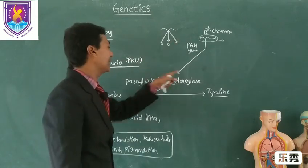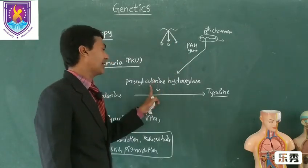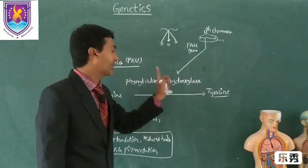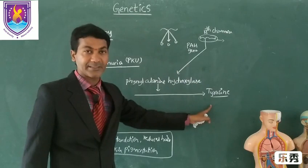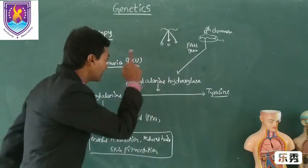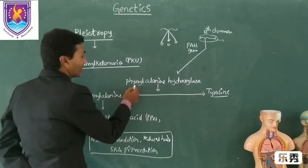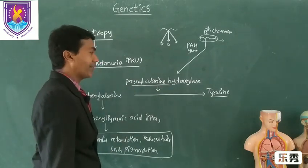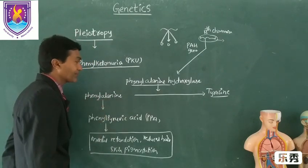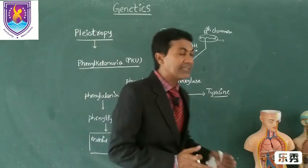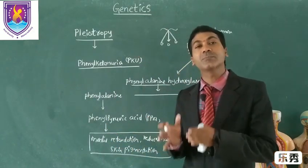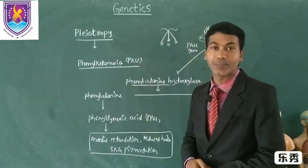When the PAH gene is not mutated, it helps release the enzyme phenylalanine hydroxylase, which converts phenylalanine into tyrosine. When it is mutated, there is a deficiency of phenylalanine hydroxylase, so phenylalanine converts into phenylpyruvic acid. This is how a single gene sometimes controls more than one phenotypic trait — known as pleiotropy.